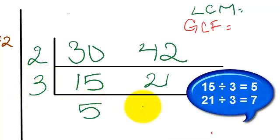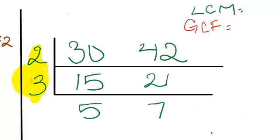So that would be 5 and 7. So now what we're going to do is you can either highlight it or circle it. I'm going to choose to highlight it.